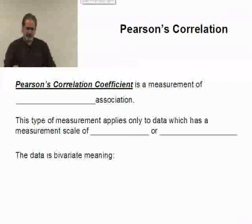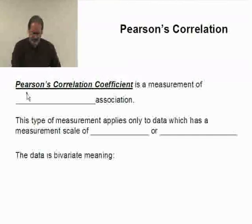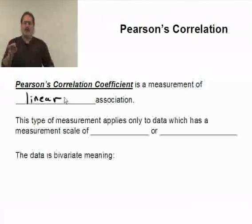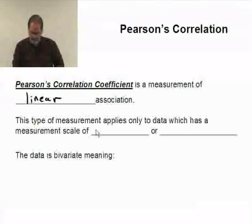Okay, now, first off, let's start talking about Pearson's correlation. Pearson's correlation is a measurement of linear association. And the linear part is extremely important. It's an appropriate tool to use for measuring the strength of linear association between two bivariate variables. So, the type of measurement applies only to data which has a measurement scale of at least interval. So, that means it must be a measurement scale of interval or ratio.